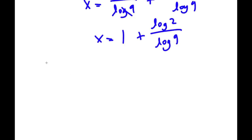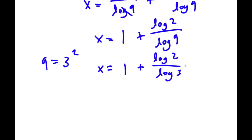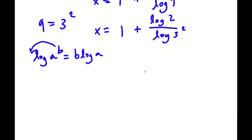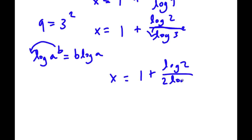Now log 9 — well, 9 is the same thing as 3 squared. So if I replace 3 squared for 9, I get x equal to 1 plus log 2 over log 3 squared. Using the logarithm power property, log 3 squared equals 2 times log 3. So we will have 2 times log 3.